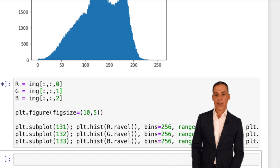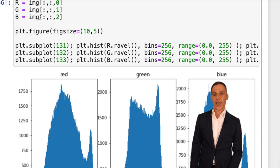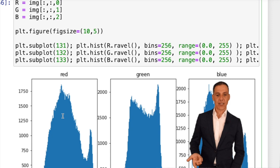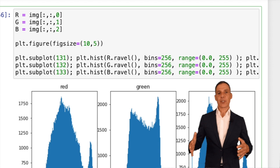Similarly, I can do this for the individual color channels. I've got RGB values, and now I'm going to unravel the red channel, the green channel, and the blue channel, and I can look at their individual histograms.